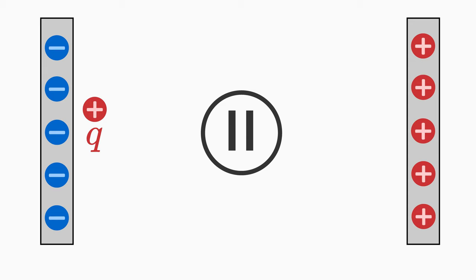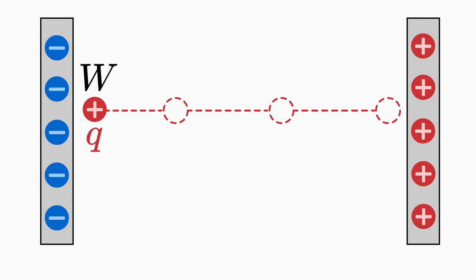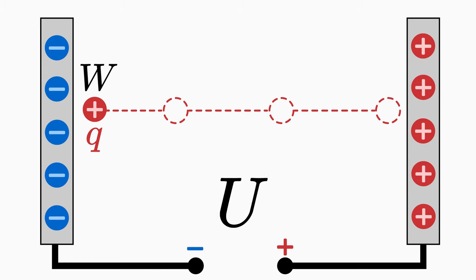Before it hits the plate, it has received a velocity v from the acceleration and thus also a kinetic energy W. This energy, which the charge has gained by moving from one plate to the other, is characterized by the electric voltage U between the plates.